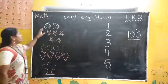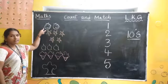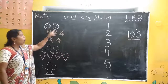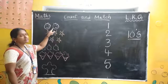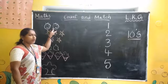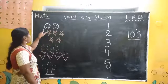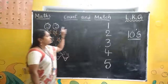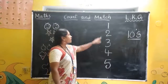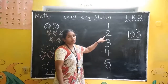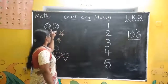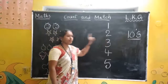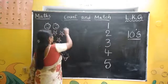Now, first one. What are these? These are smileys. How many smileys are there? Come and count it. One, two. Where is number two? Here. Two smileys — number two. Match this, children.